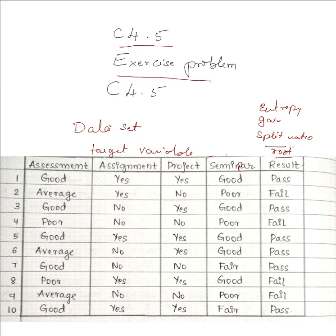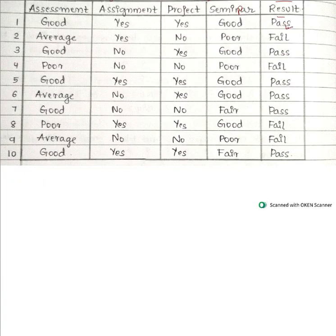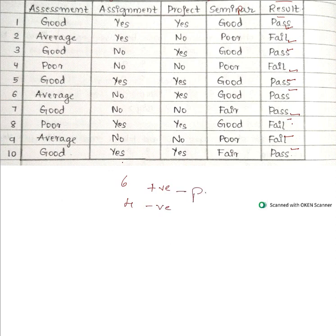The target variable is result. We need to count how many pass and fail instances are present. Observing the data: instances 1, 3, 5, 6, 7, and 10 are pass classes, and the remaining four — instances 2, 4, 8, and 9 — are fail class. So we have 6 positive (pass) instances and 4 negative (fail) instances.